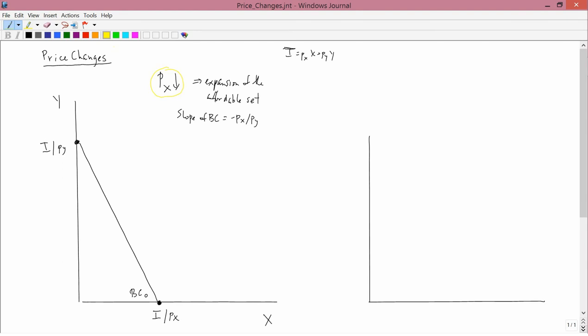In this problem, we have the price of X falling. But we don't have any change in the price of Y. We don't have any change in income. So the upper left point, which is I divided by the price of Y, has no change in either the numerator or denominator, so it stays where it was before.